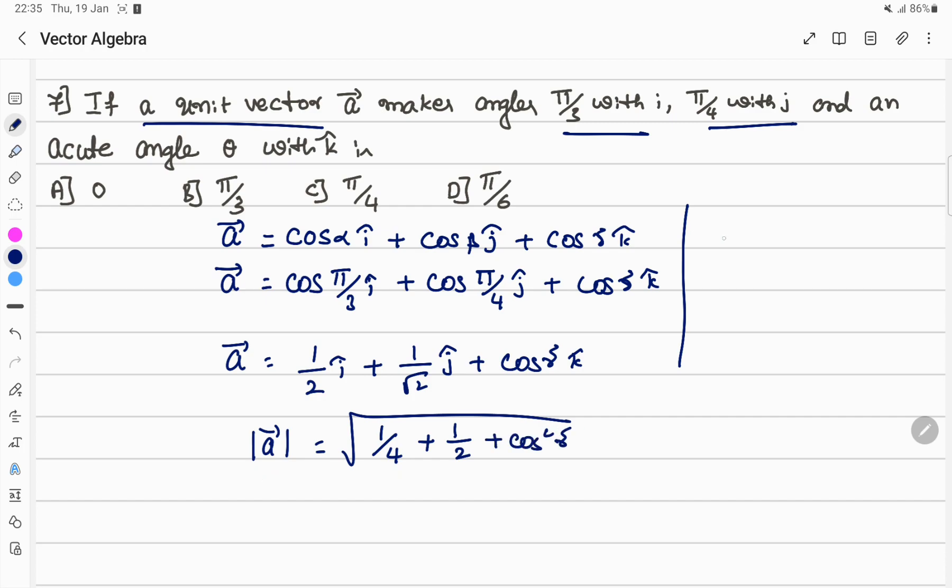If A is a unit vector, I apply magnitude of A equals 1. Square root of 1 by 4 plus 1 by 2 plus cos squared gamma equals 1. This gives 3 by 4 plus cos squared gamma equals 1.